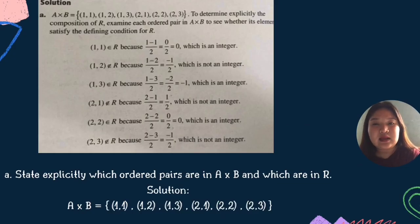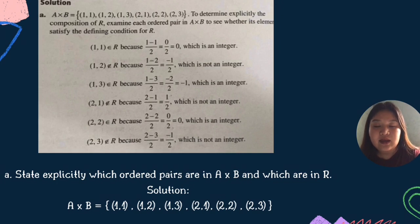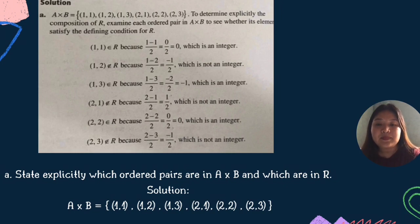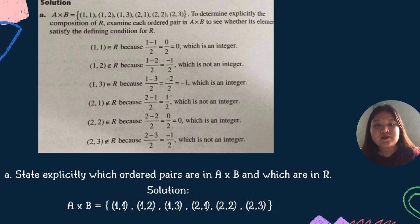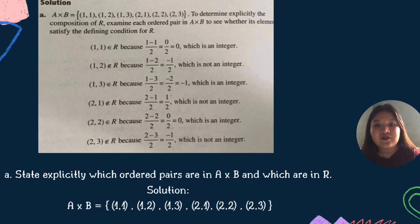Dito makikita natin na ginamit yung mga ordered pairs para i-substitute yung x and y sa condition na x minus y over two. Yung result sa pinagsubtract na x and y ay dapat isang integer. Dahil kung hindi, ibig sabihin na yung ordered pairs ay hindi element of R. So, sa ginawa nating substitution at simple computations, the only ordered pairs that prove to be elements of R are (1,1), (1,3), and (2,2), dahil integers yung kinalalabasan ng results after substitution.